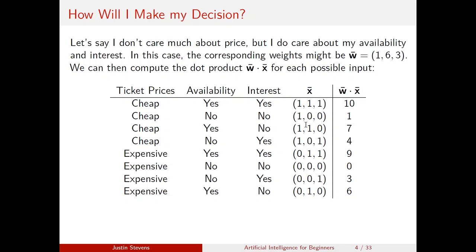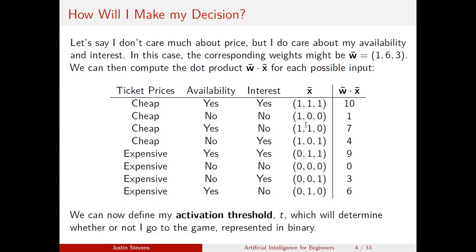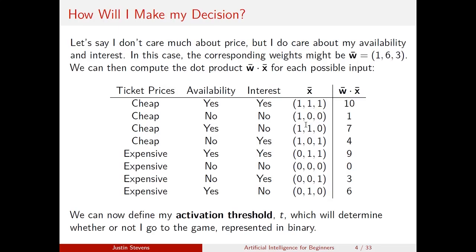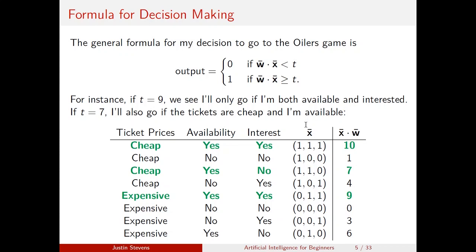A high value — let's call this an activation threshold t, which I'll use to determine whether or not I go to the game, represented in binary. My output is 1 if weights dot input is greater than or equal to t, and 0 if it's less than t — 1 representing I go to the game, 0 representing I don't. If t equals 9, I go in the two cases where the weighted sum exceeds 9, which is when I'm both available and interested. If I extend this to t equals 7, I get one more case: if the tickets are cheap and I'm available, I'll also go.